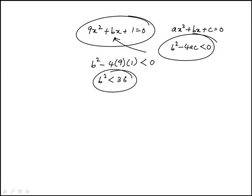With these types of inequalities, I like to use a number line. B squared has to be less than 36, which means